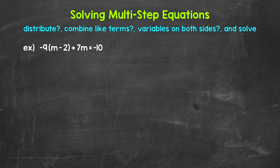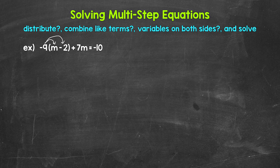The first thing we're going to do is look for any opportunity to use the distributive property to remove any parentheses. Do we have any parentheses we can remove? Yes — we can use the distributive property to remove the parentheses around m minus two. We need to distribute negative nine to m and negative two.